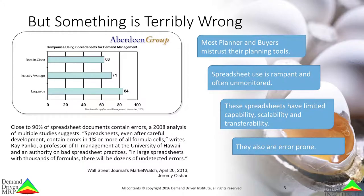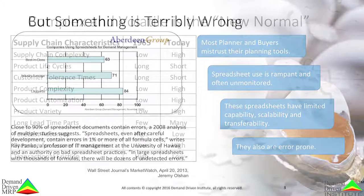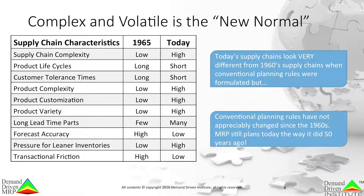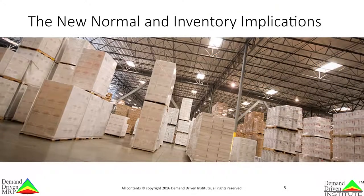This is not news to seasoned supply chain personnel and demonstrates how little faith they have in MRP. What happened to the promise of the tool? One basic thing we need to realize is that today's supply chains look nothing like the supply chains of the 1950s, 60s, and 70s when the MRP rules were written. Complex and volatile is the new normal, yet these rules have not changed. MRP still plans the way it did 50 years ago. There is a huge gap between the circumstances MRP was meant for and the circumstances in which it is currently being used. This change of circumstances has huge implications for supply chain planning.